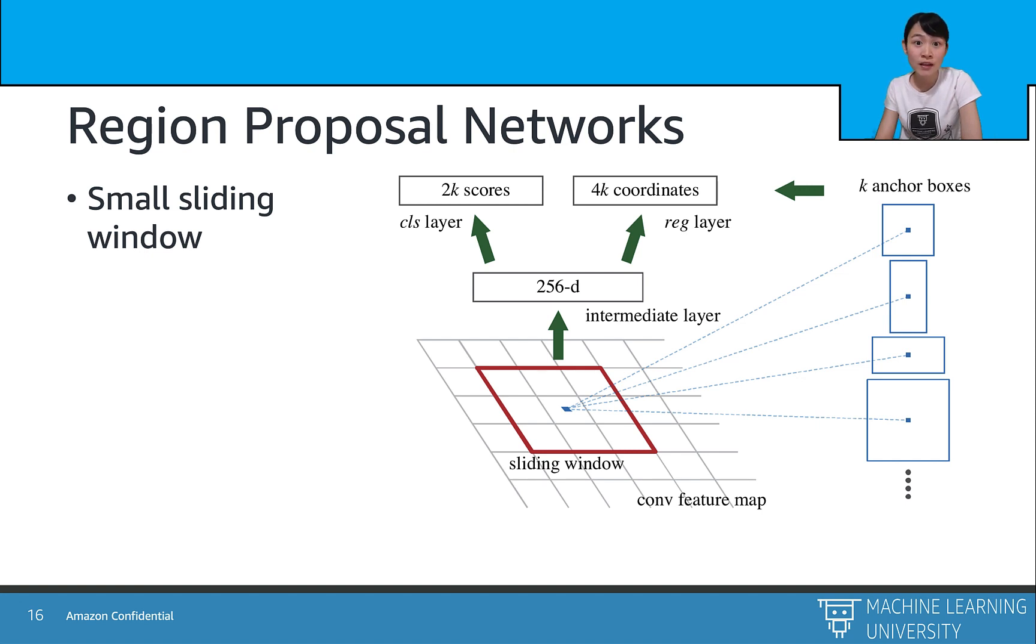And each sliding window is mapped to a lower dimensional feature with 256 dimensions or 512 dimensions. Then this feature is fitted to two sibling fully connected layers: a box regression layer and a box classification layer. At each sliding window location, we simultaneously predict multiple regional proposals, which we call as anchor boxes. And they are of different scales and ratios.